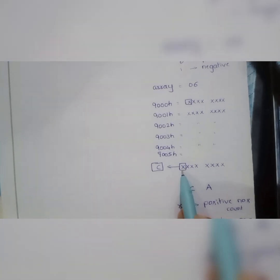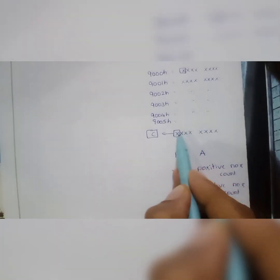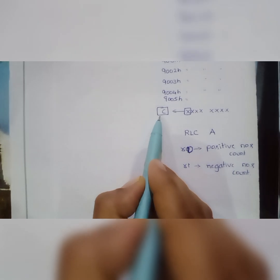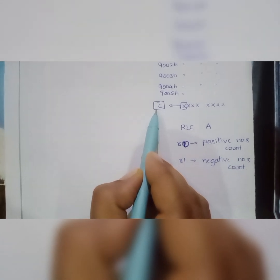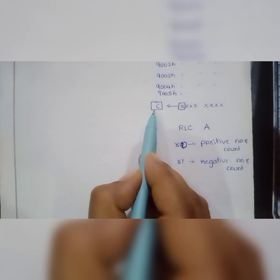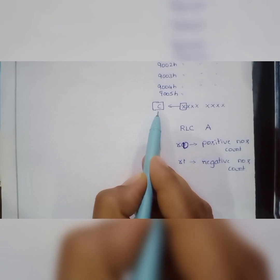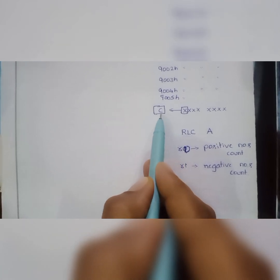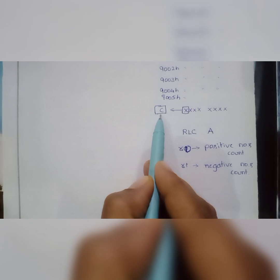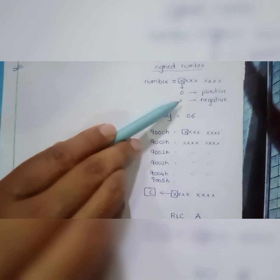To do this, I take the number from the first memory location and check whether the most significant bit is 0 or 1. I will use the RLC instruction — rotating the number left through carry. I then check the carry using JC or JNC instruction to identify whether the number is positive or negative. If the carry bit is 0, the number is positive; if it is 1, the number is negative.